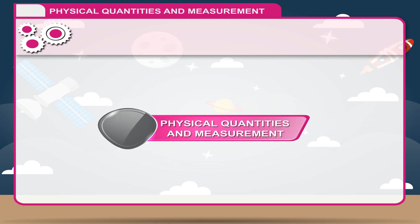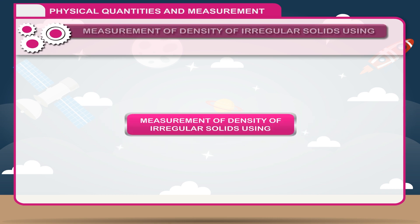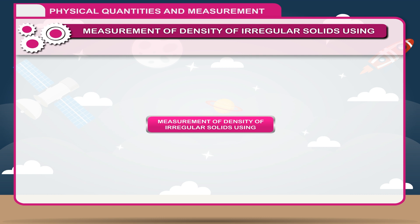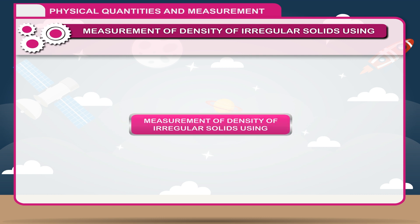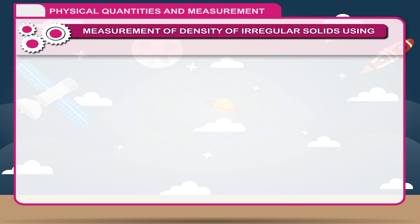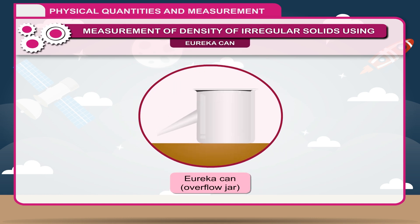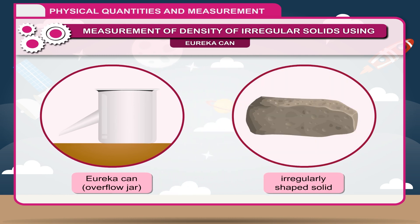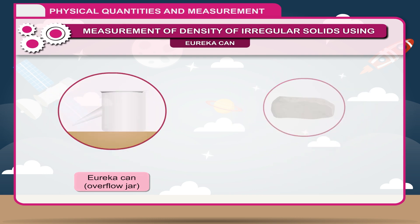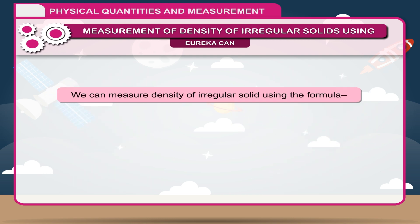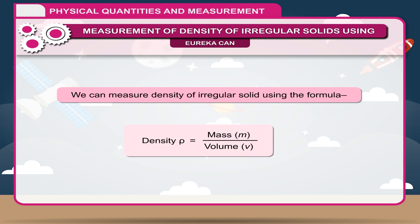Physical quantities and measurements. Measurement of density of irregular solids using a Eureka can. A Eureka can or overflow jar helps to find the volume of an irregularly shaped solid. By measuring the mass of the solid using a spring balance or beam balance, we can measure density of an irregular solid using the formula: Density is equal to mass divided by volume.